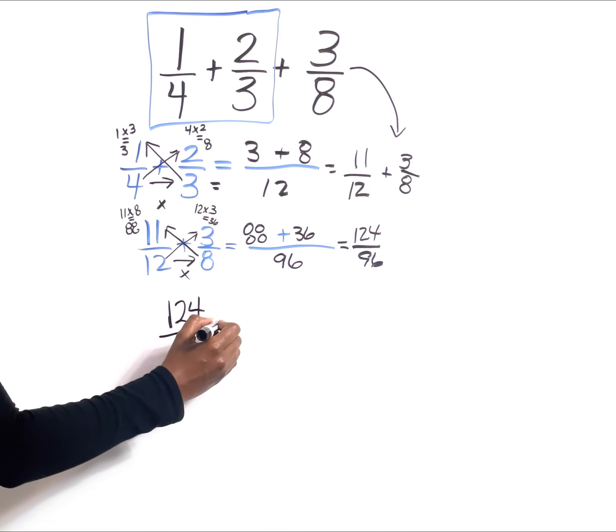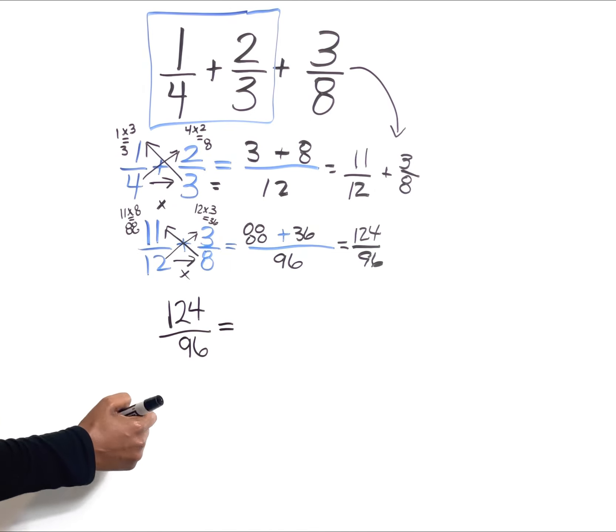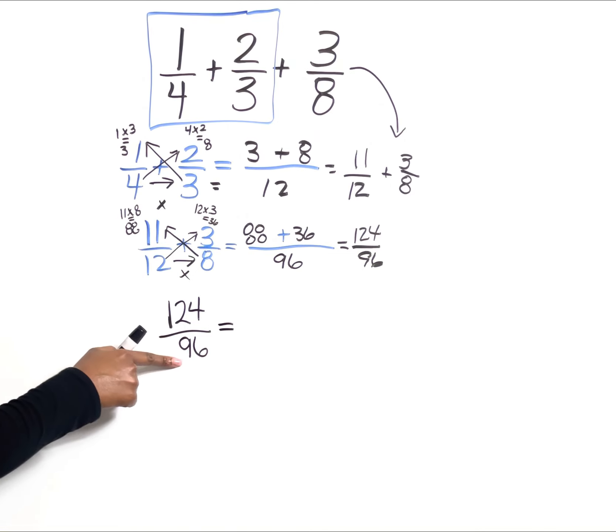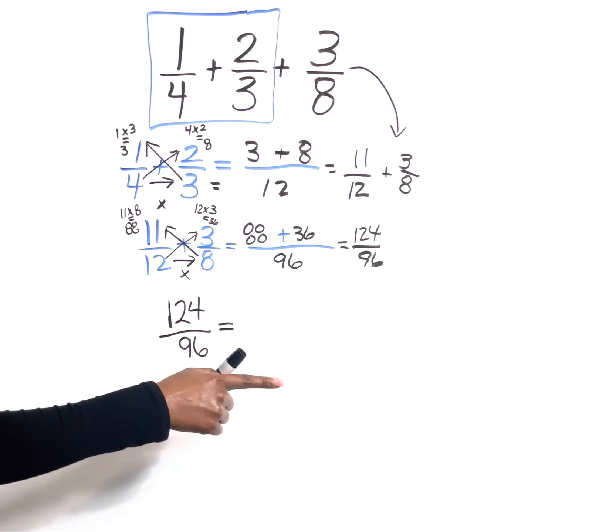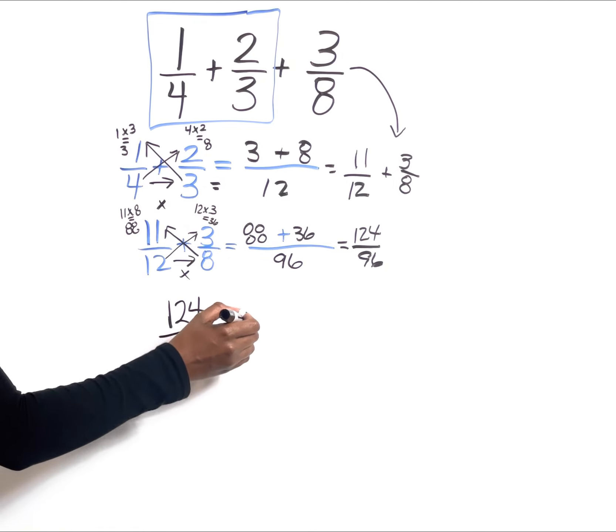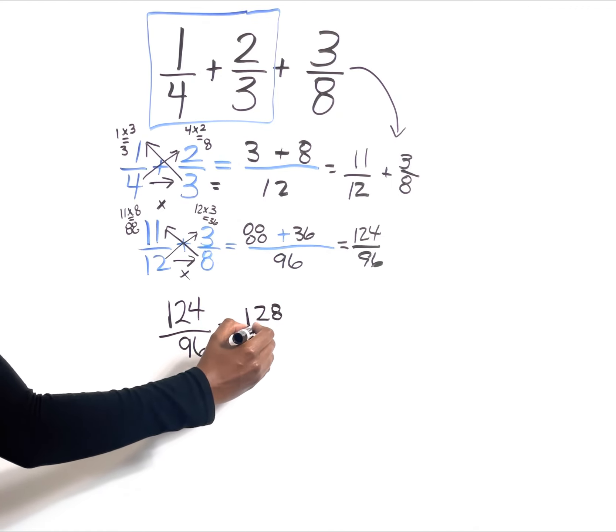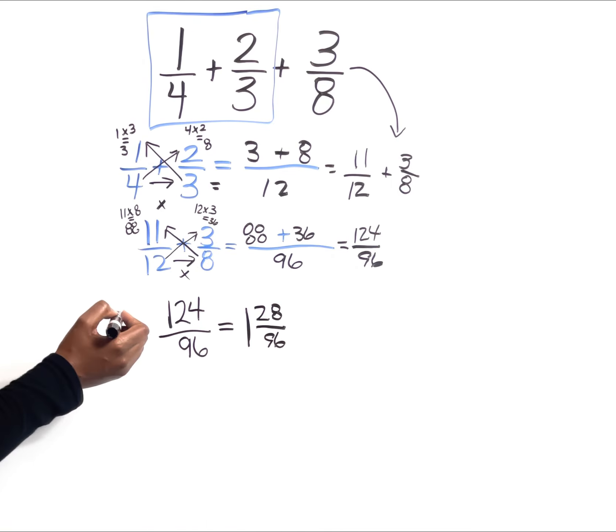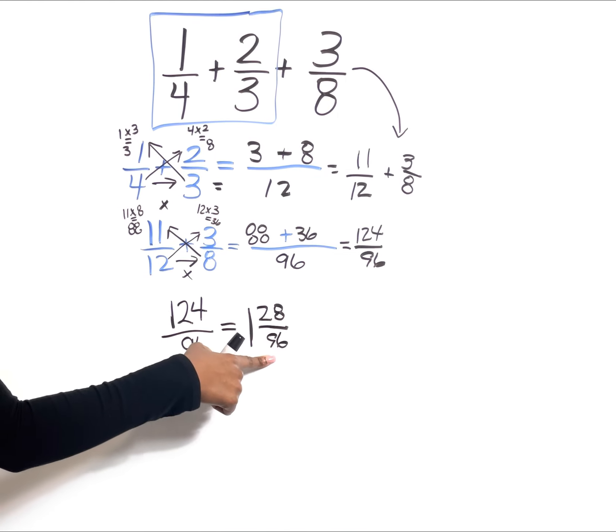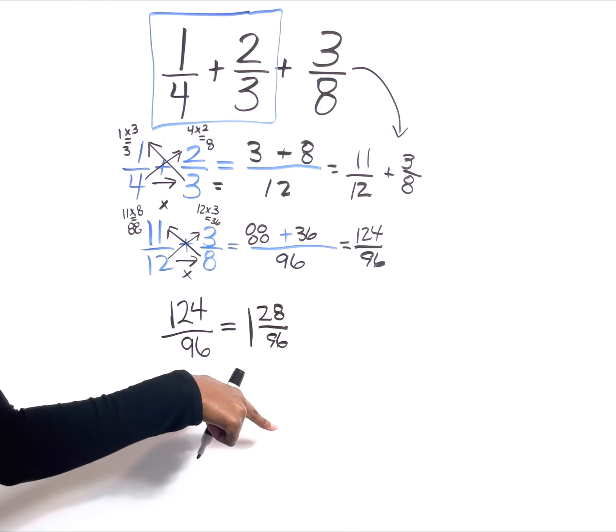That should be something you're comfortable with, so don't forget to utilize your calculator. You want to say how many times can 96 go into 124? If you do 124 ÷ 96 in your calculator, it's going to give you 1 point something. We're only looking at the whole number, it's going to be 1, and we're going to have 28 left over, over 96. Remember, our fraction always has to be in the lowest terms.